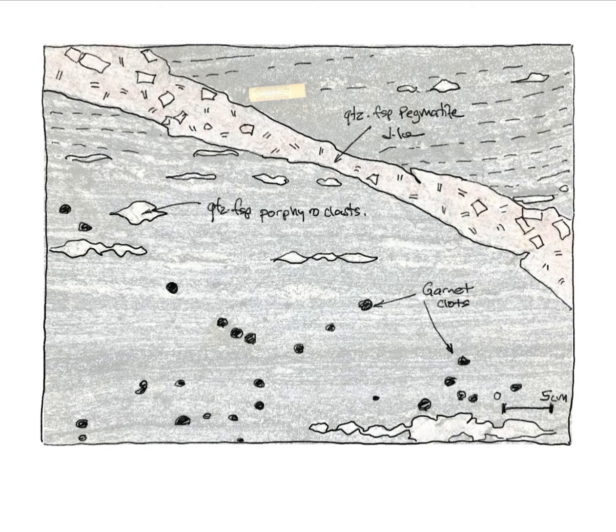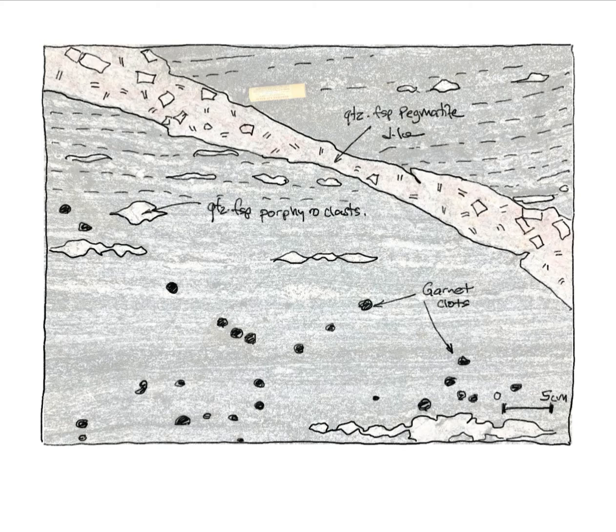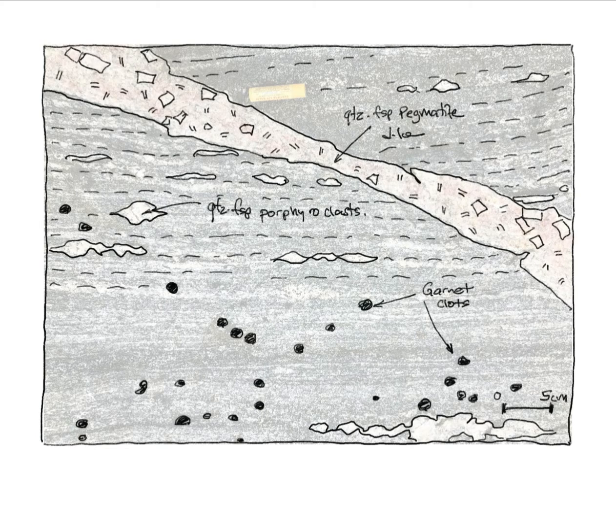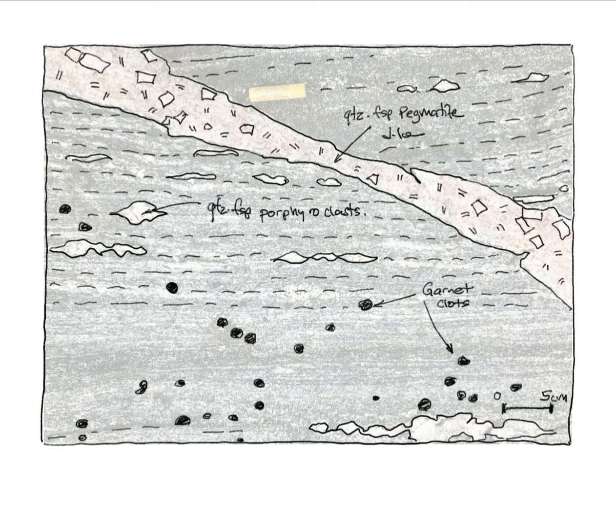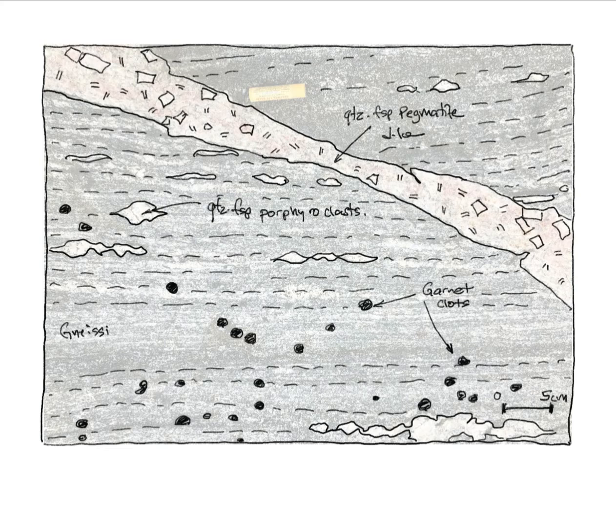I then begin working on the gneiss by drawing in some of the white quartz feldspar porphyroclasts and color in some of the smaller grape-colored clots of garnet before highlighting the gneiss exfoliation with dashes.